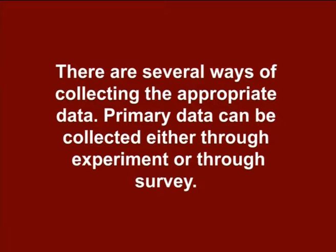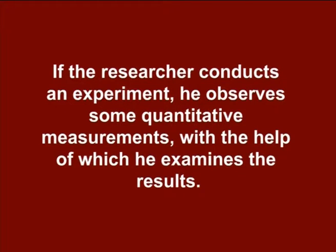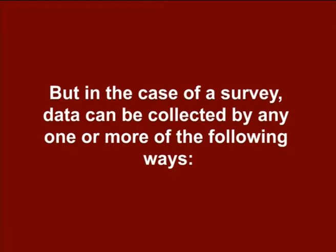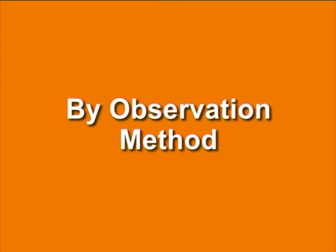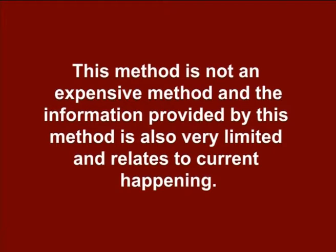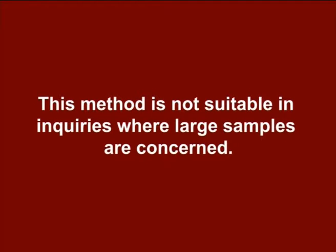Primary data can be collected either through experiment or through survey. If the researcher conducts an experiment, he observes some quantitative measurements with the help of which he examines the results. In the case of a survey, data can be collected by several ways. The first method is by observation method — the collection of information by way of the investigator's own observation without interviewing the respondents. This method is not expensive, but the information provided is very limited and relates to current happenings. This method is not suitable in inquiries where large samples are concerned.